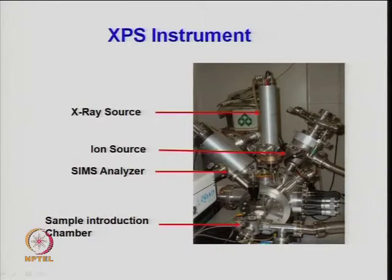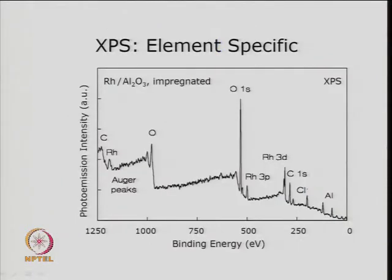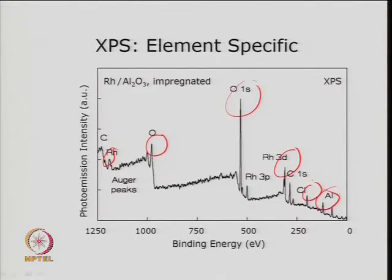Looking at the actual XPS unit: X-ray source, ion source, secondary ion mass spectrometer, analyzer, sample introduction chamber, and detector source. The results are in the form of photoemission intensity (arbitrary units) versus binding energy. You can see different peaks, which are specific to the structure or composition of the matter. For example, in a rhodium-alumina catalyst, you can see rhodium, aluminum, and oxygen peaks, and their positions — 1s, 3d, 3p — are very specific in terms of binding energy.